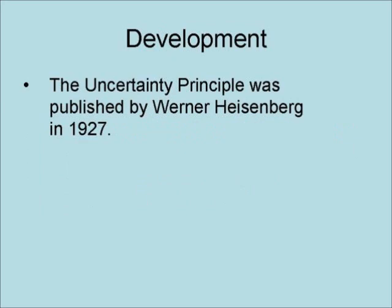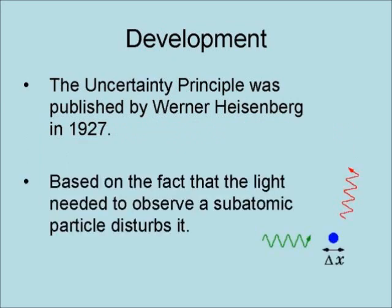The uncertainty principle was published by Werner Heisenberg in 1927. It is based on the fact that the light needed to observe a subatomic particle will disturb it.